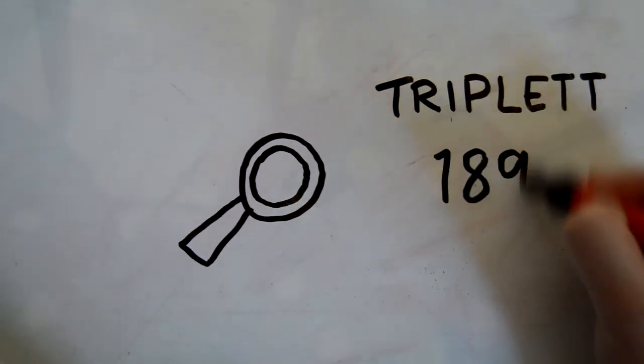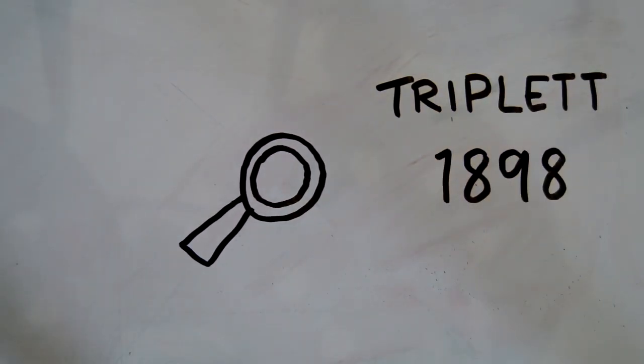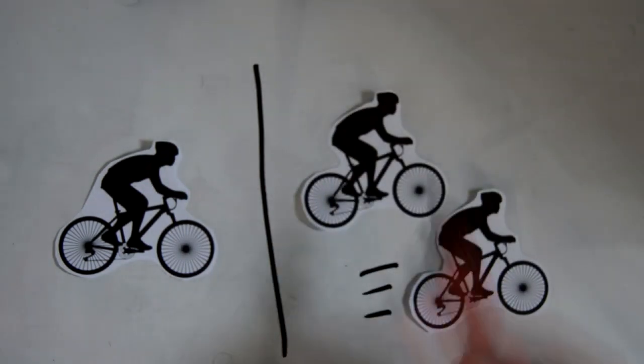The audience effect was first described in the 1800s in a study investigating cyclist speed records. Results showed that people cycled faster when competing with others than when they were alone.